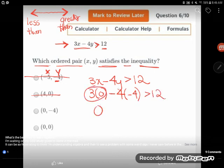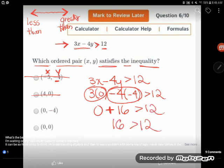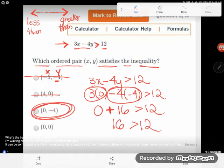And we're looking for something that's greater than 12. OK, 3 times 0 is 0. Negative 4 times negative 4 is positive or plus 16. And I want to know if that's greater than 12. As 0 plus 16 is 16, 16 is greater than 12. Boom, that ordered pair satisfies the inequality.